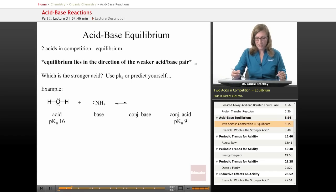So if this equilibrium lies in the direction of the weaker acid-base pair, we're going to have to be able to determine which pair that is. So how do you decide who the stronger acid is?